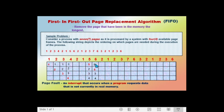The next page called is page 2. The frames contain pages 5, 6, 3, and 4. Page 2 is not in the frame, causing one page fault. We need to swap out a page; from among pages 5, 6, 3, and 4, it is page 3 that has been in memory the longest. Page 3 is swapped out and page 2 is swapped in.